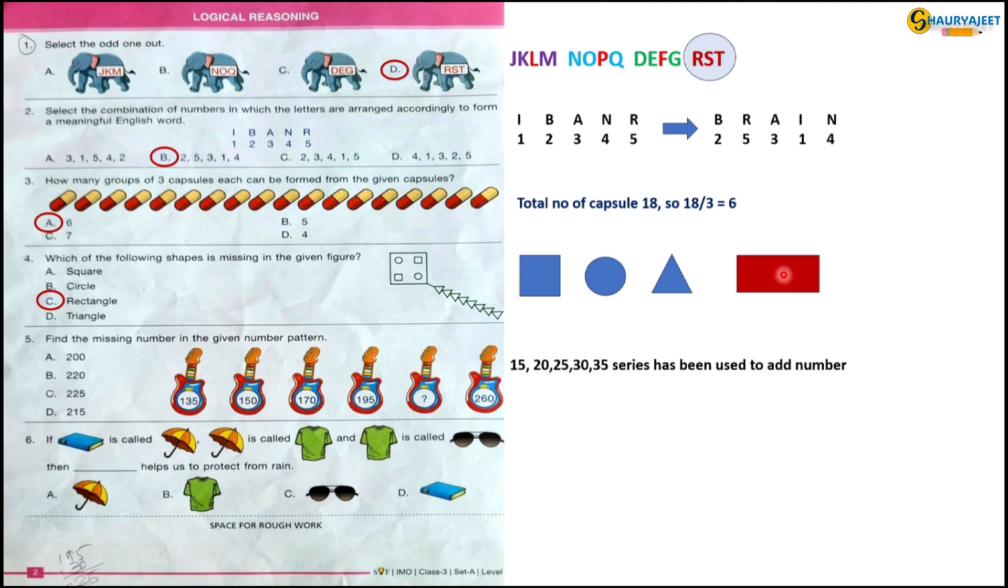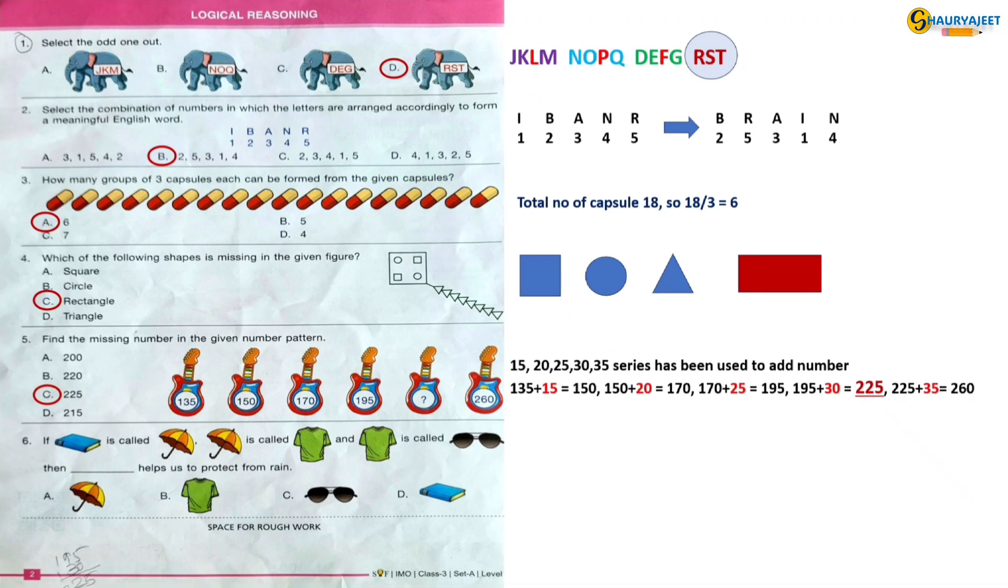Question 5: Find the missing number in the given number pattern. They have given us a number pattern. In the first order the difference is 15, but in the second order the difference is 20 between the numbers. Means they are increasing the number by 5. So the answer will be 225. So option C is correct.